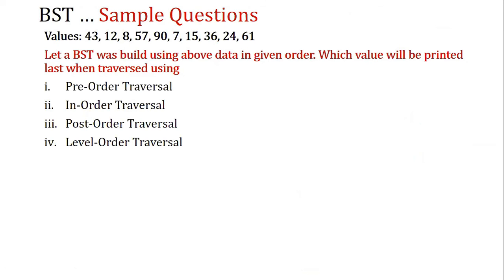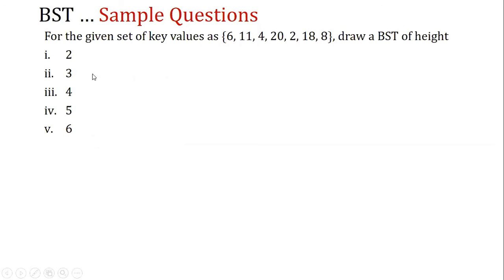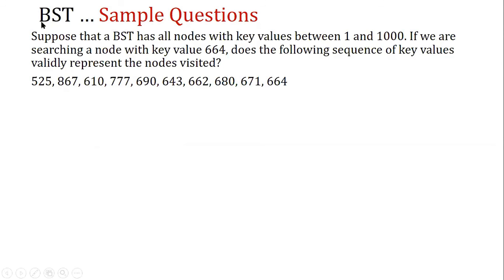The assignments include: adding pre-order, in-order, post-order, and level-order traversals. Using the given data, determine what value will be printed first when traversed. Draw a BST of a given height from a given set of key values. Suppose a BST has all nodes with key values between 1 and 1000; if we are searching for a node with key value 664, determine whether the given sequence of key values validly represents the nodes visited.